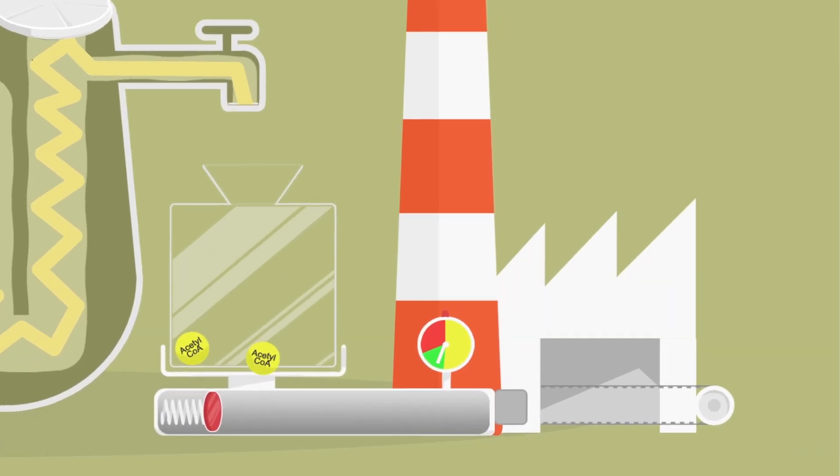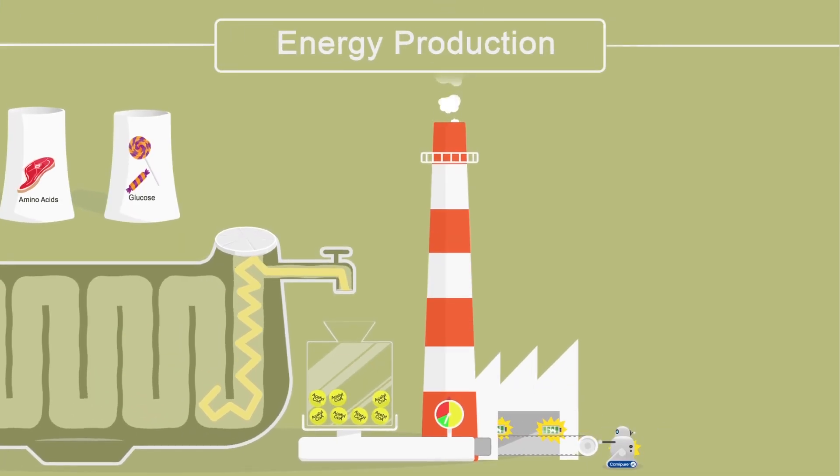The breaking down of fatty acids releases acetyl-CoA, which enters the Krebs cycle. The Krebs cycle is a series of chemical reactions to generate ATP, a form of energy.